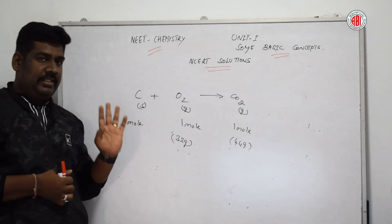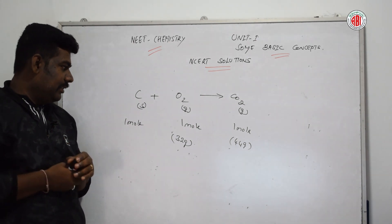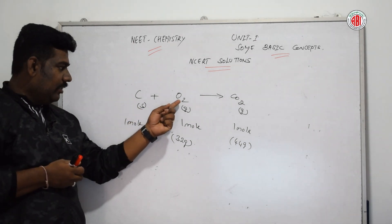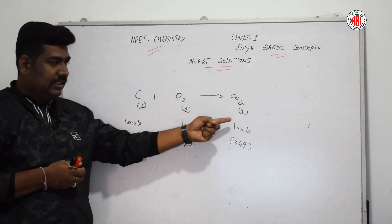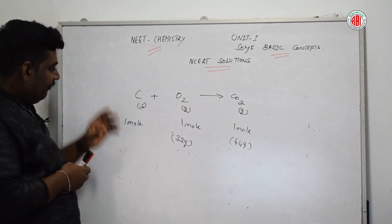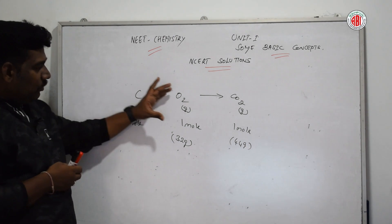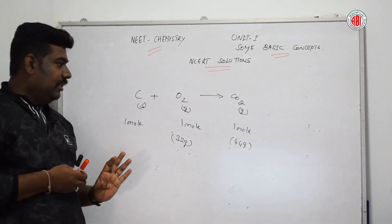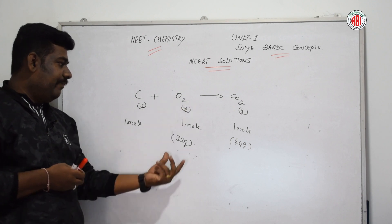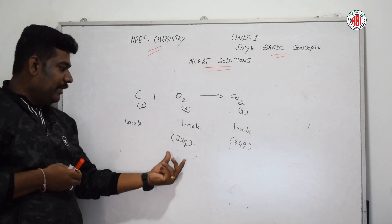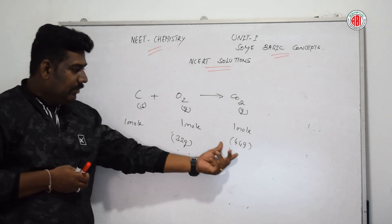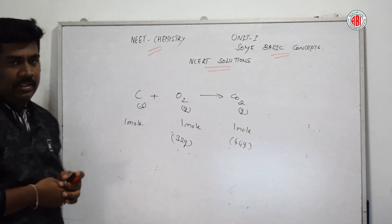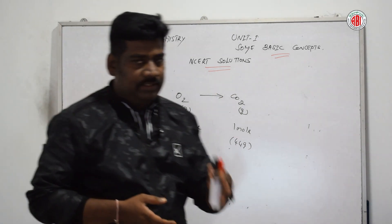During combustion, carbon is in the form of a solid, oxygen is in the form of a gas, and carbon dioxide is in the form of a gas. One mole of carbon reacts with one mole of oxygen to form one mole of carbon dioxide. The molecular mass of oxygen is 32 grams and the overall molecular mass of carbon dioxide is 44 grams.